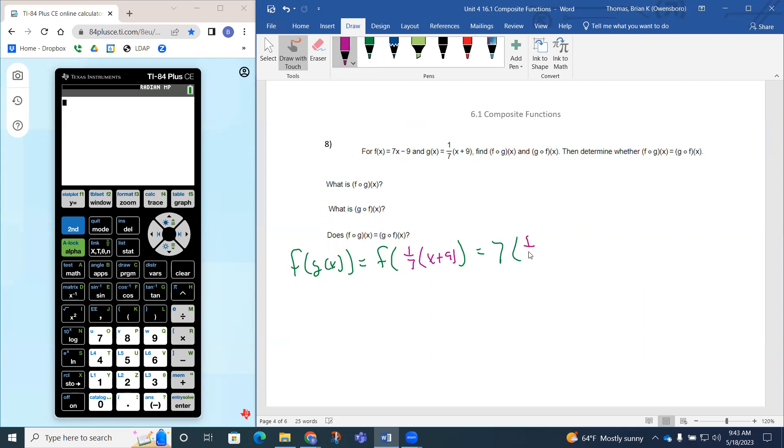So I have this 1/7 times this x plus 9 goes in, and then we subtract the 9 after that.